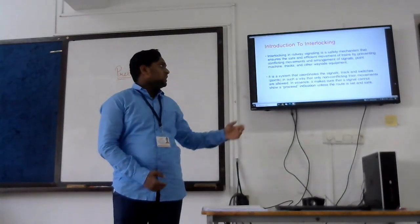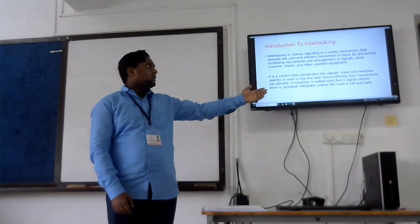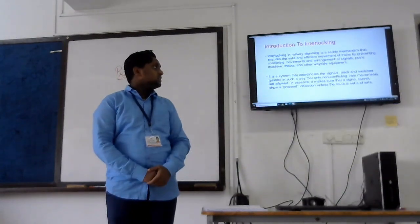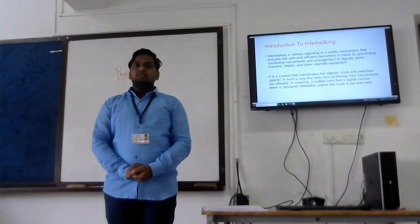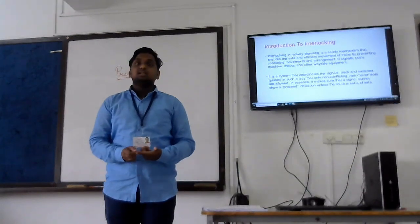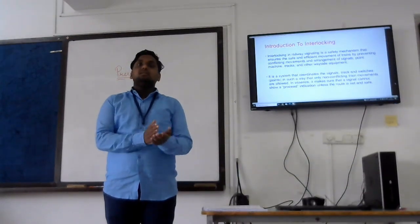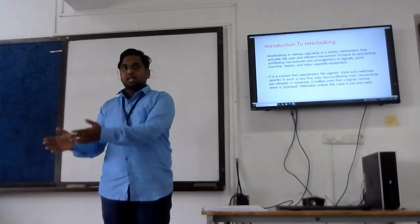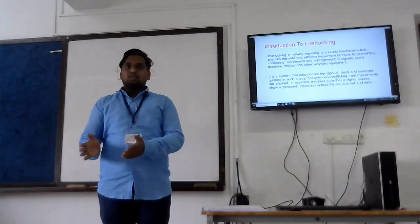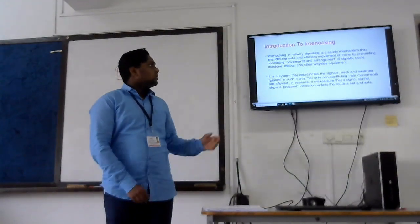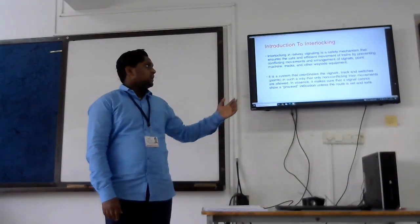It is a system that coordinates signals, tracks and switch points. Interlocking is basically a system that arranges signals, points and switches according to the way of a train, showing movements for the train in such a way that only non-conflict training movements are allowed.